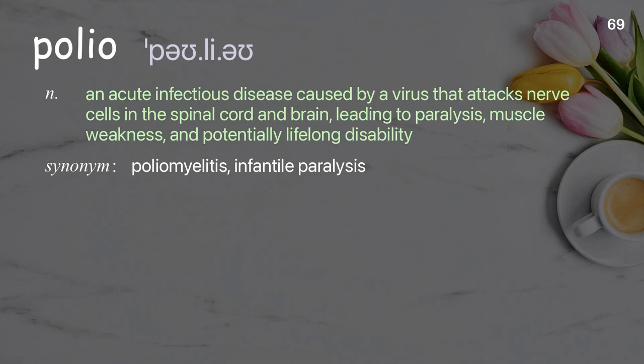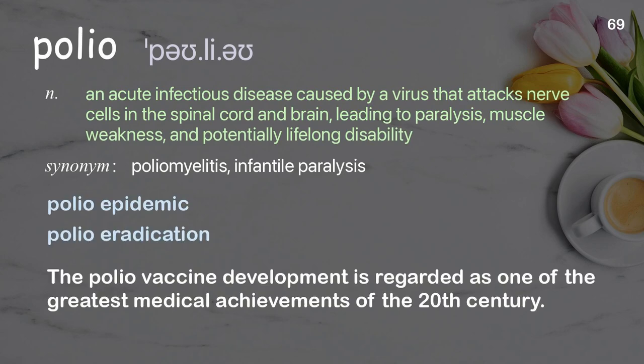Polio: an acute infectious disease caused by a virus that attacks nerve cells in the spinal cord and brain, leading to paralysis, muscle weakness, and potentially lifelong disability. Examples: polio epidemic, polio eradication. The polio vaccine development is regarded as one of the greatest medical achievements of the 20th century.